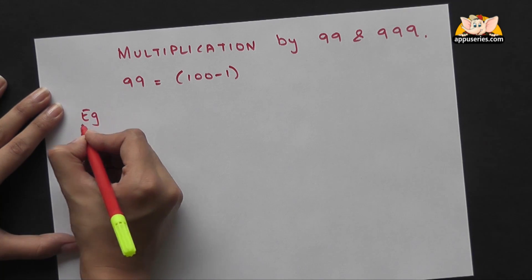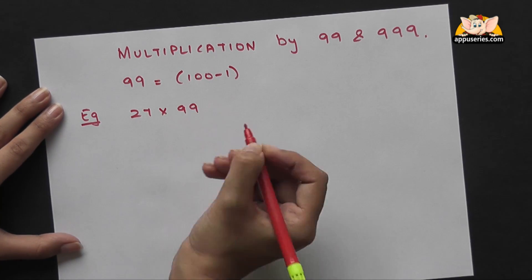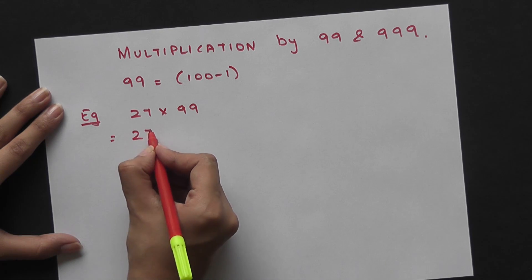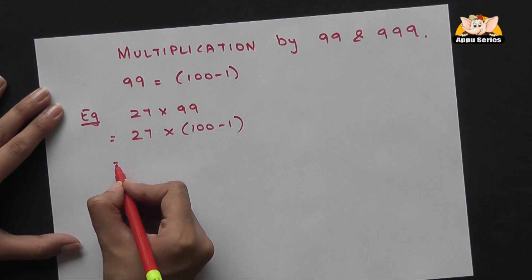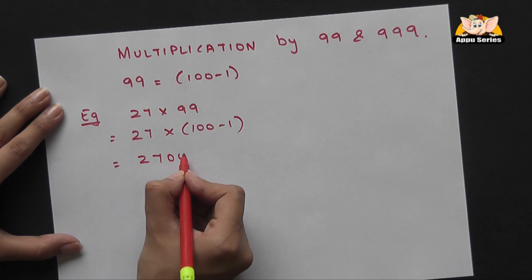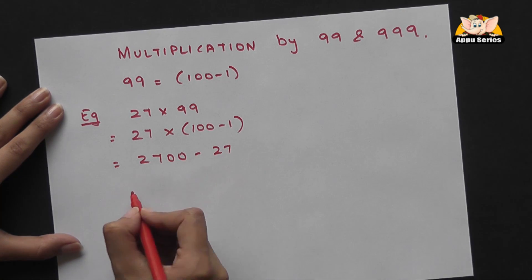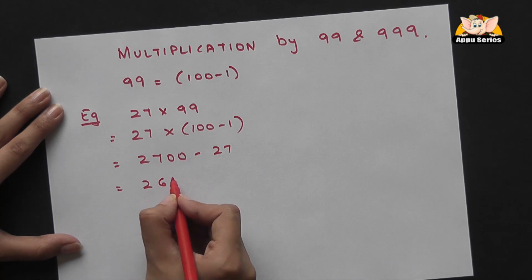Taking an example of 27 into 99, we get 27 into 100-1. That is 2700-27, which gives you 2673.